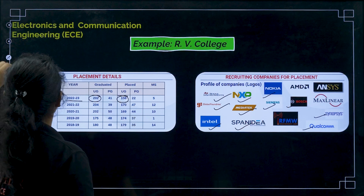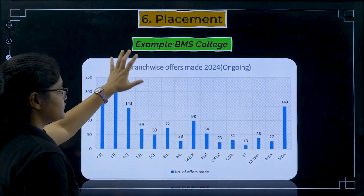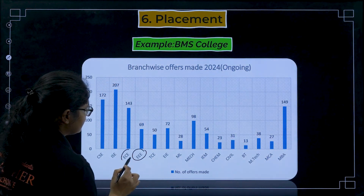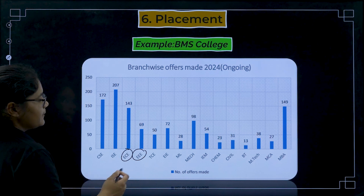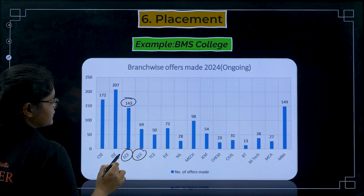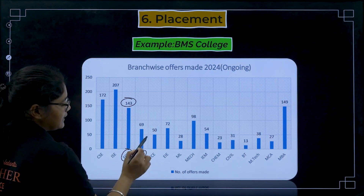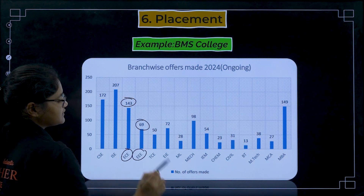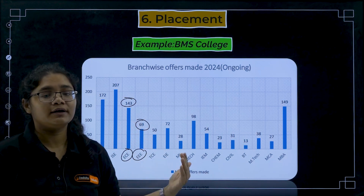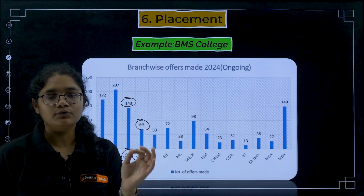Comparing EEE and ECE placements at BMS College: the number of offers made to ECE was 143, whereas for EEE it was 69. So ECE is clearly a more demanding branch compared to EEE.